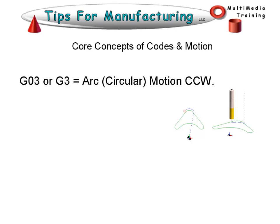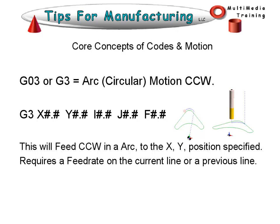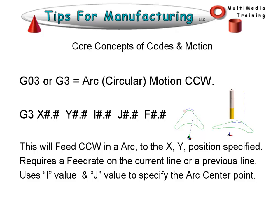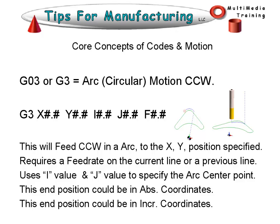G03, or G3, is the arc circular motion command counterclockwise. We have the G3, the X and Y position, the I and J value, and a feed rate. This will feed counterclockwise in an arc to the XY position specified. It requires a feed rate on the current line or a previous line, and it uses the I and J values to specify the arc center point. The end position could be in absolute or incremental coordinates.